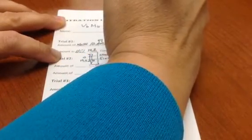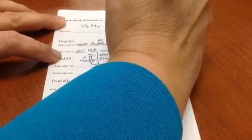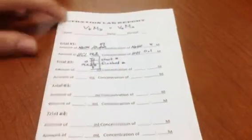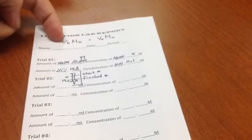The volume of my base times the molarity of my base equals the volume of my acid times the molarity of my acid. So this is the equation that you use, and you're, in this problem, solving for the molarity of your base.